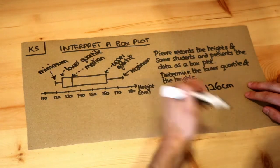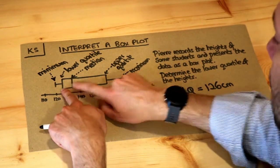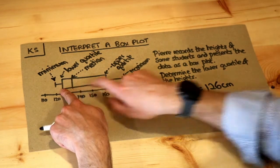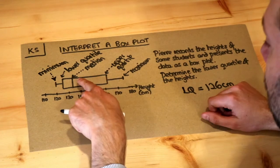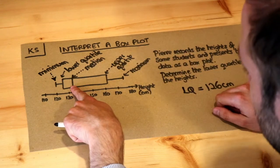But let's see what else we can interpret from this box plot. Can you see that this right part of the box is wider than the left part of the box? And what that tells you is that the difference between the heights between the median student and the upper quartile student,